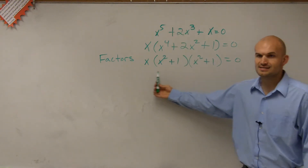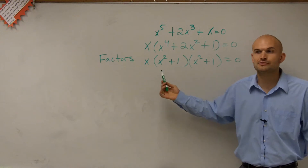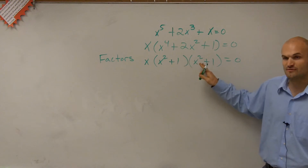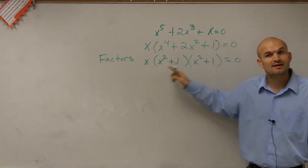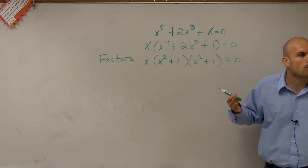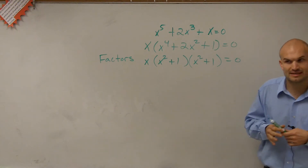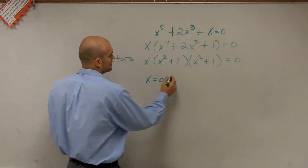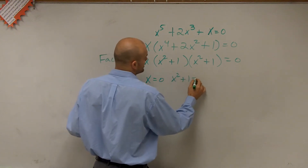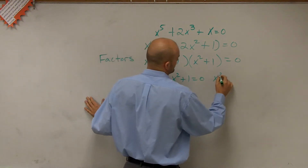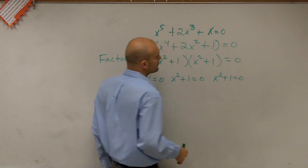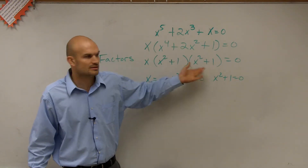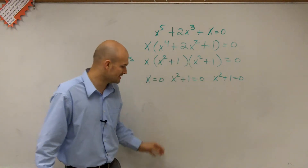So the next step to solving by factoring is to apply the zero product property. Because once we have one value times another value times another value that equals zero, we know that one of these values has to equal zero. So we say x equals zero, or x squared plus 1 equals zero, or x squared plus 1 equals zero — but we notice these are the same, so we don't need to do it twice.